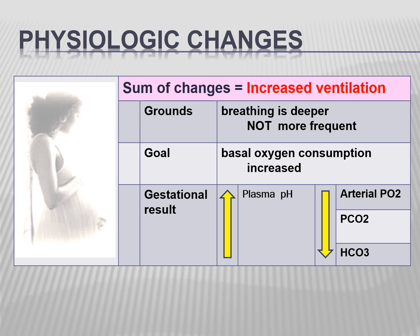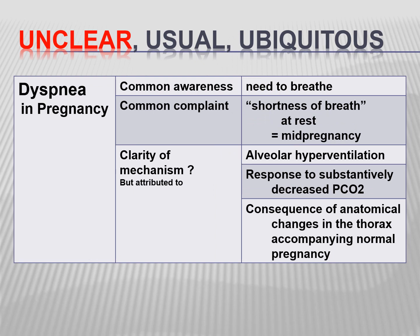Breathing is deeper but not more frequent because the goal is more basal oxygen consumption. As a result, in pregnancy, there is increased plasma pH and decrease in arterial oxygen, carbon dioxide, and bicarbonate. Dyspnea in pregnancy can occur — patients often complain of shortness of breath at rest and are very aware that they need to breathe. The mechanism may be attributed to alveolar hyperventilation in response to decreased carbon dioxide and anatomical changes in the thorax accompanying normal pregnancy.